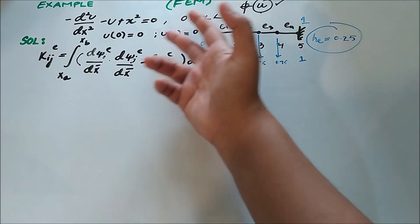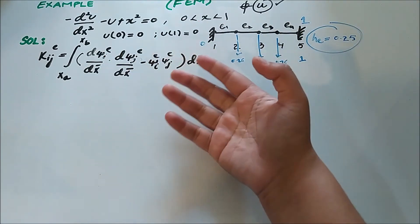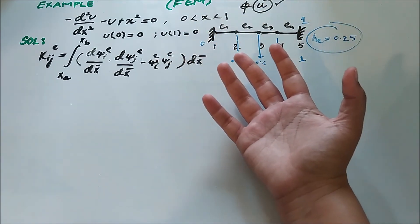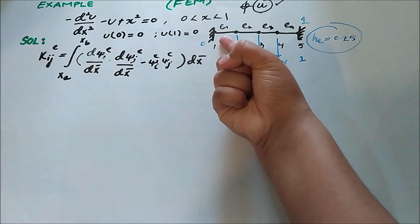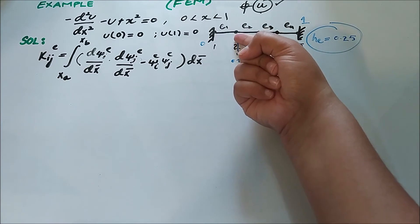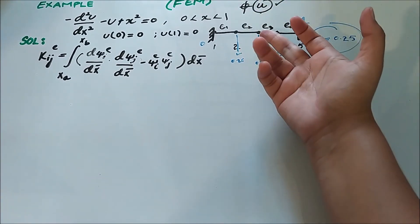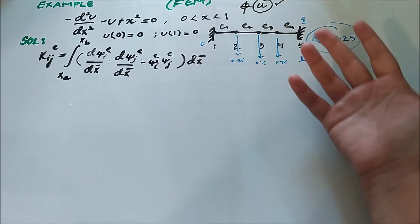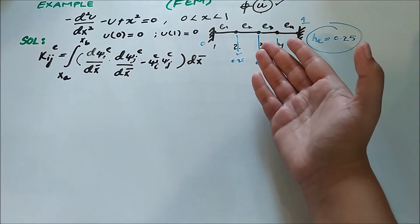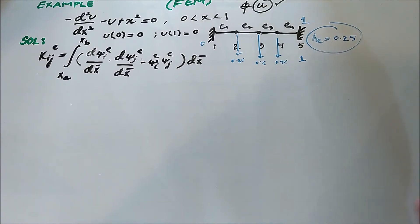The stiffness matrix structure is the same for all elements because the shape functions don't change and the length of each element is the same — 0.25. In the local system, each element runs from x-bar = 0 to x-bar = 0.25. This symmetry is very beneficial: we can compute the stiffness matrix once at the local level and reuse it for all four elements.